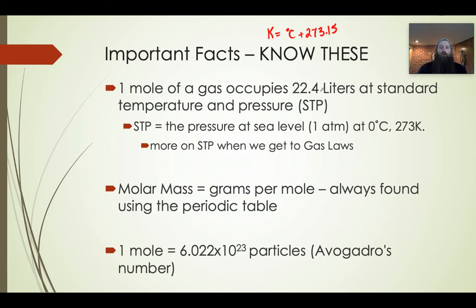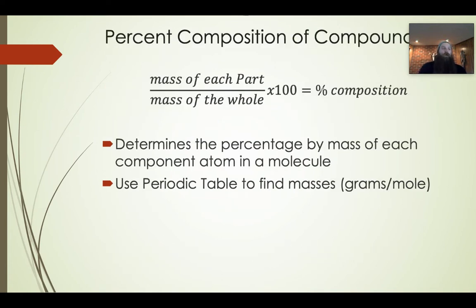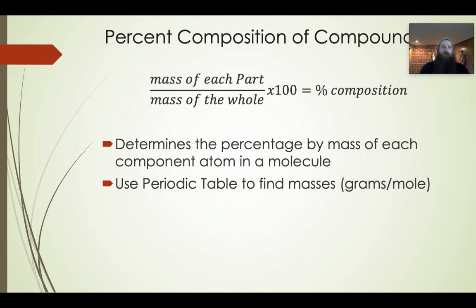Before we get into full stoichiometry problems, let's look at three related math problems involved in stoichiometry. They are not true stoichiometry in that they are conversions, but they are math problems we need to be able to do. The first one is finding the percent composition of a compound. This is a really simple exercise. To find percent composition — the part of the whole — you do the mass of the part divided by the mass of the whole, times 100.